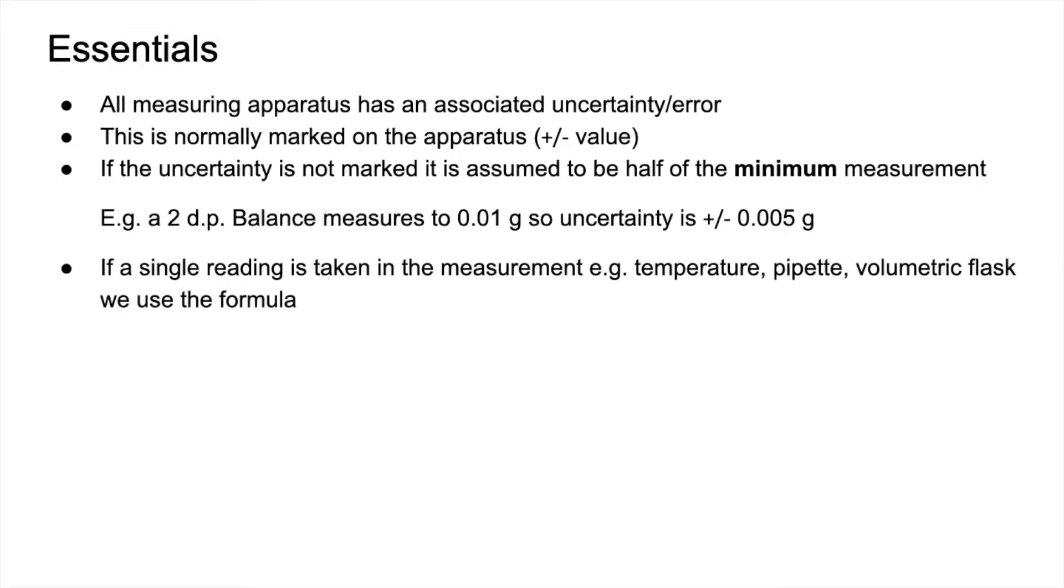If we take a single reading in a measurement, so if you take a single temperature, you measure a volume with a pipette or a volumetric flask, then we use this formula. Percentage uncertainty is that plus or minus value divided by what's been measured, multiplied by 100.